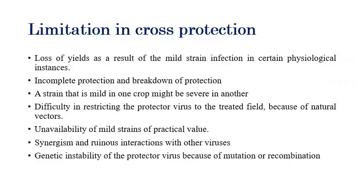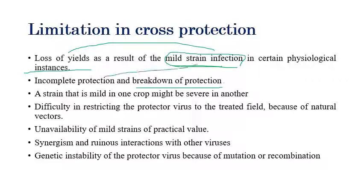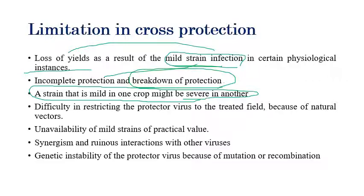Limitations of cross protection: yield loss may occur due to mild strain infection. Incomplete protection and breakdown of protection can happen, especially when viruses are highly virulent. A strain that is mild to one crop may become severe to another crop, so knowledge about host range is essential.